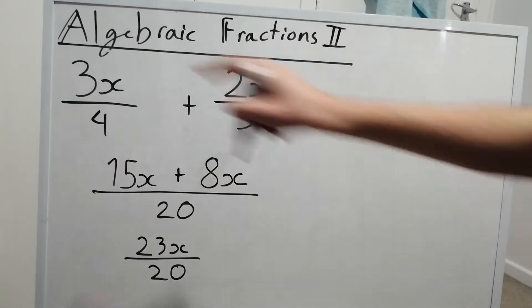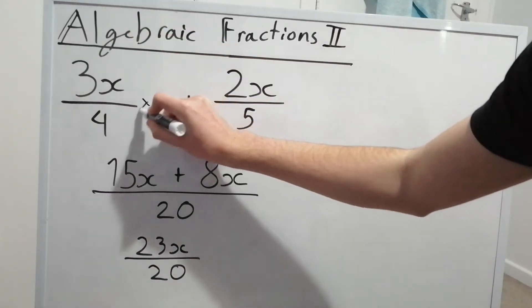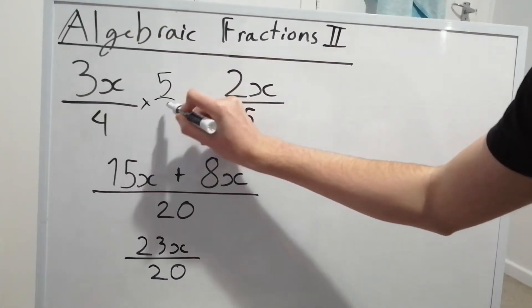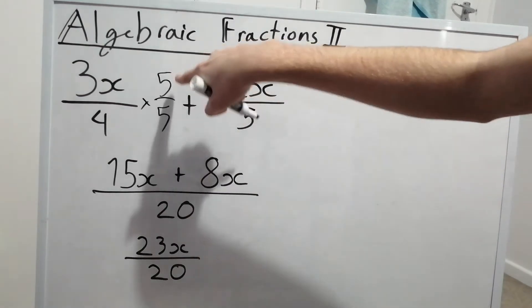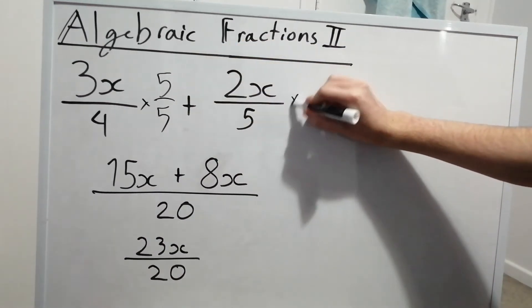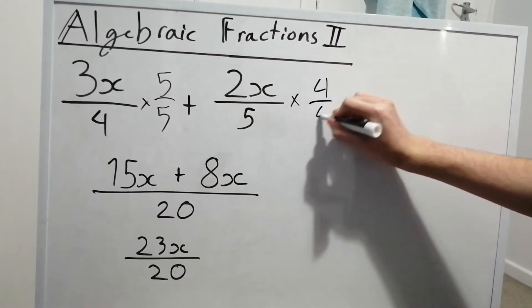And the easiest way to go about doing that is to multiply this fraction by 5 over 5, and this fraction by 4 over 4.